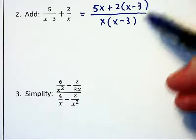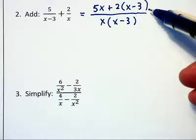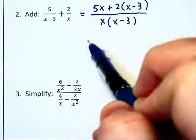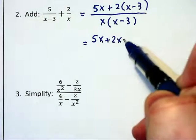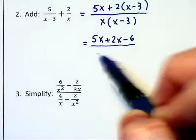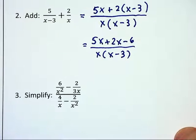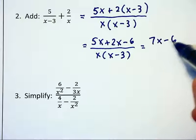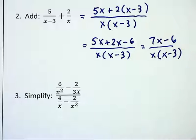Do not cancel those x minus 3s. That one up in the numerator is not a factor of the numerator. It's only multiplied by the 2. So the numerator becomes 5x plus 2x minus 6 over this x times x minus 3, and if you combine like terms in the numerator, you now have 7x minus 6 over x times x minus 3, which is then the answer to this problem.